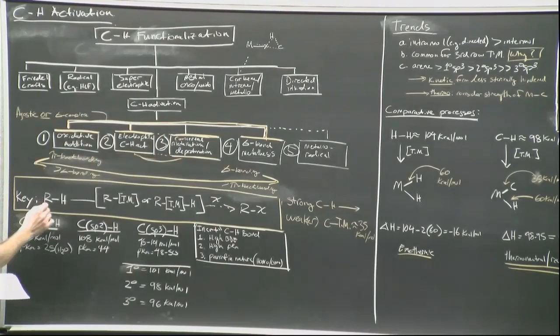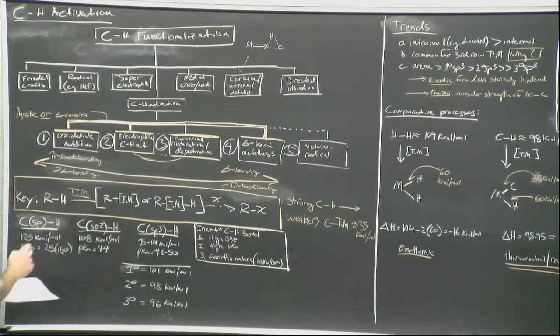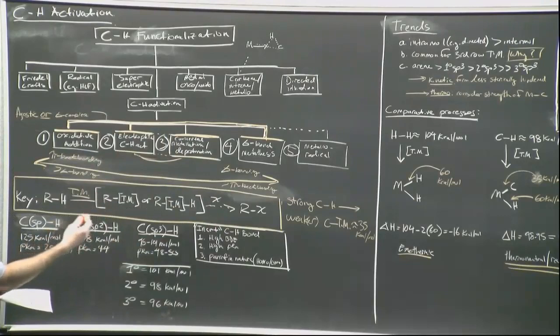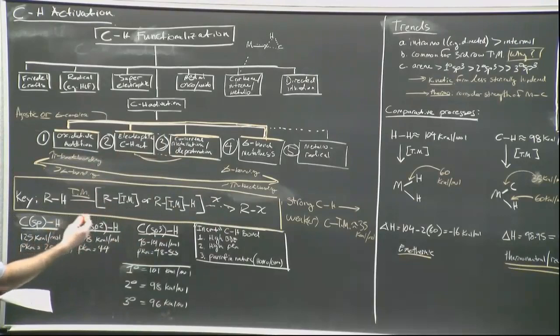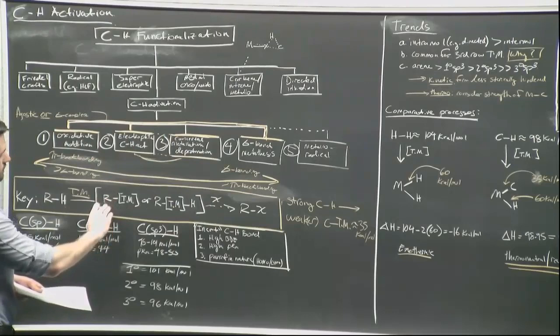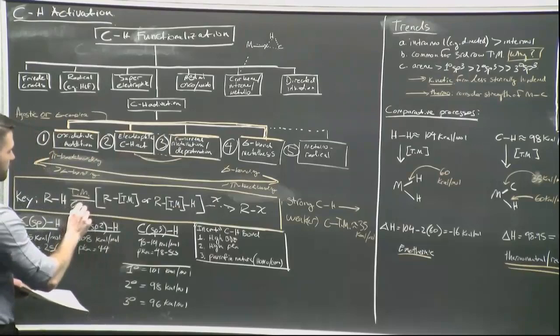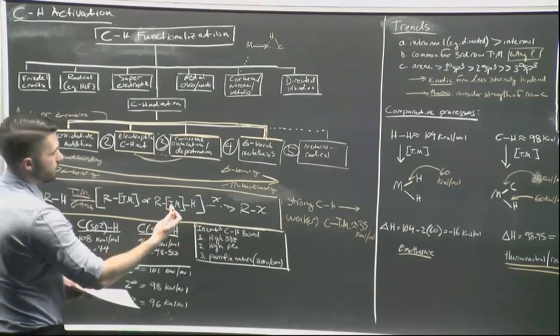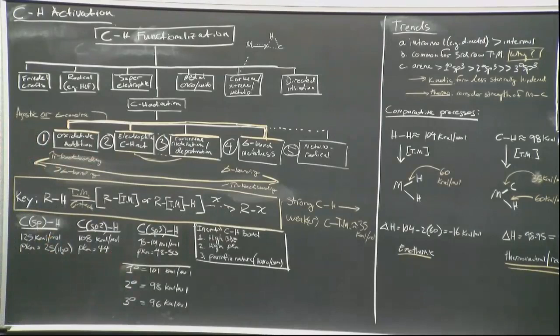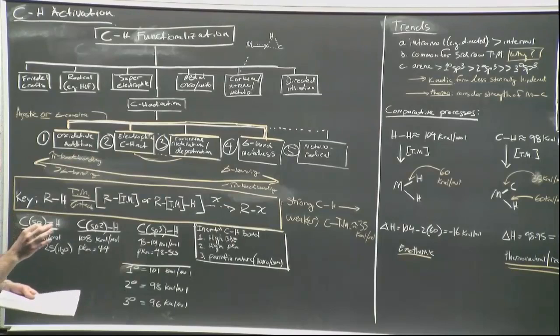The key transformation is going from a C–H species through a transition metal to either directly insert and form a new transition metal–carbon and transition metal–hydrogen bond, or — for electrophilic, CMD, and sigma bond metathesis mechanisms — just making a carbon–transition metal species. We're taking relatively strong C–H bonds and converting them to fairly weak carbon–transition metal bonds of about 35 kcal/mol.